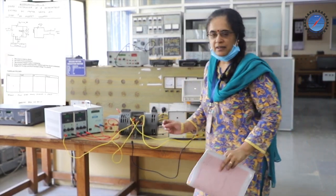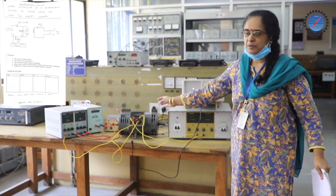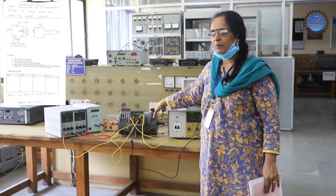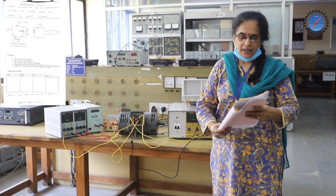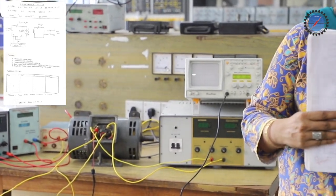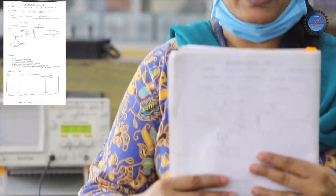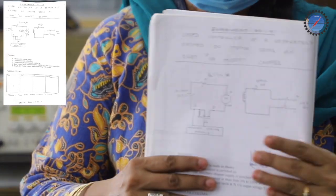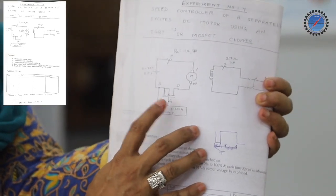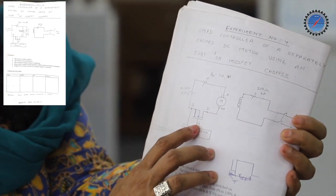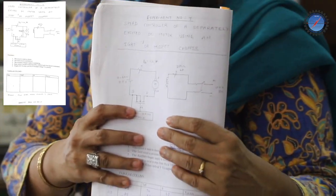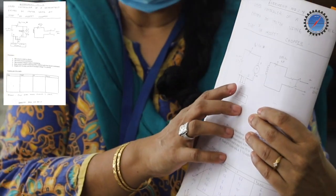Here in this separately excited setup we have the DC shunt motor. The rating of the shunt motor is 220 volts and the speed is 1500 RPM. This is the circuit for the DC motor chopper circuit as you can see here. Here in place of MOSFET, we are going to use IGBT. MOSFET terminals are gate, drain and source. Since we are going to use IGBT, the terminals of IGBT will be collector, emitter and gate.